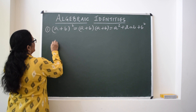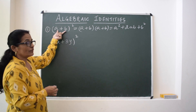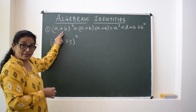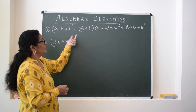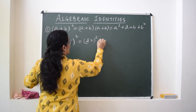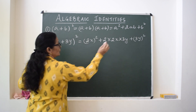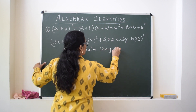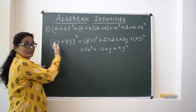For example, (2x + 3y) whole square. Comparing with the identity, here a is 2x and b is 3y. The question can be given either as the whole square or as (2x + 3y) into (2x + 3y). The expansion is: first term squared plus 2 times first term times second term plus second term squared. Opening the brackets gives 4x² + 12xy + 9y². This is the first identity and an example of its use.